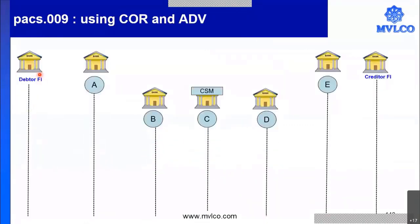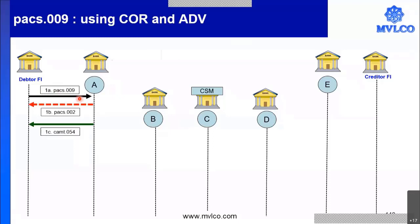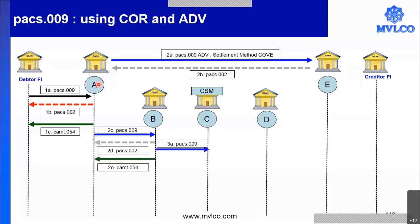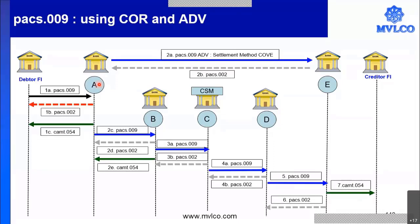The debtor is also a financial institution and the creditor is also a financial institution. This scenario is identical to the cover payment scenario for corporates. The debtor FI can send a PAX009 or a PANO1 to Bank A. Bank A then creates a PAX009 advice with the settlement method cover, similar to how our PAX008 cover process works for customer payment. Bank A also creates a PAX009 core message, which moves onwards to carry out the completion of the transaction. Bank A has the PAX009 advice and the PAX009 actual fund movement, and based on that we credit the beneficiary. This is how the pre-advice and core process is used when all parties are financial institutions.